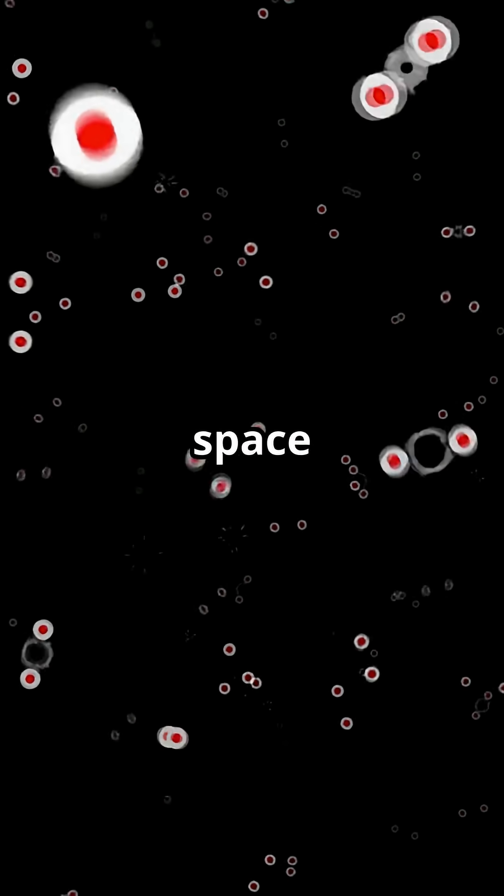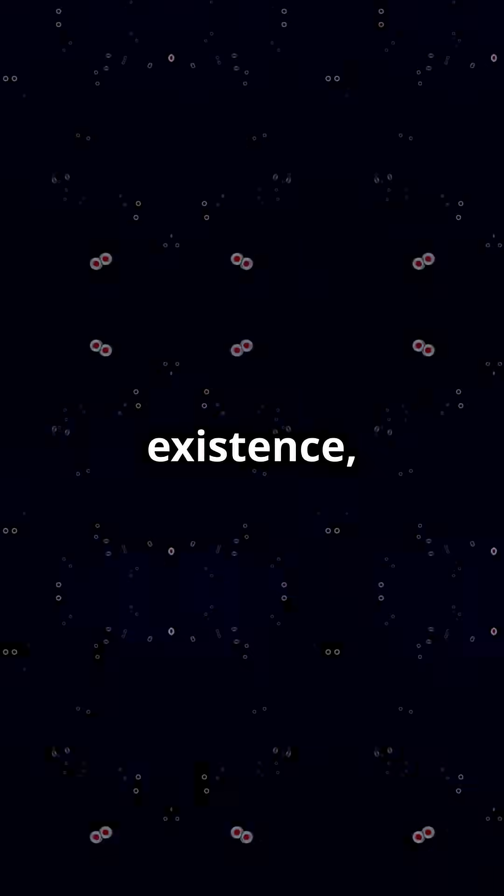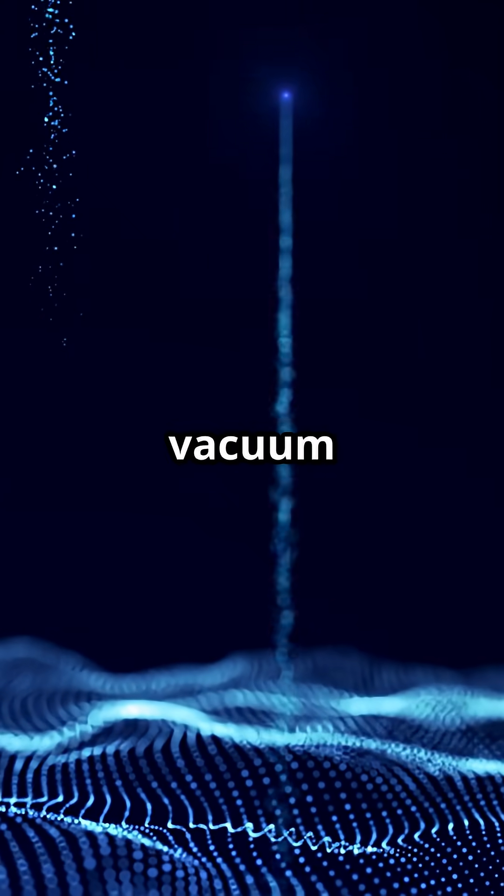Even in total darkness, space is humming with invisible energy. Particles pop in and out of existence, flickering like whispers in the dark. This restless dance is called quantum vacuum fluctuations.